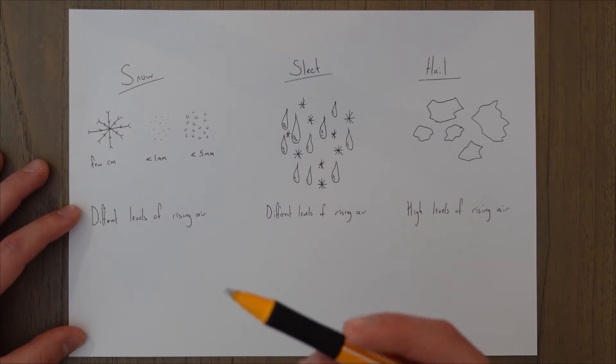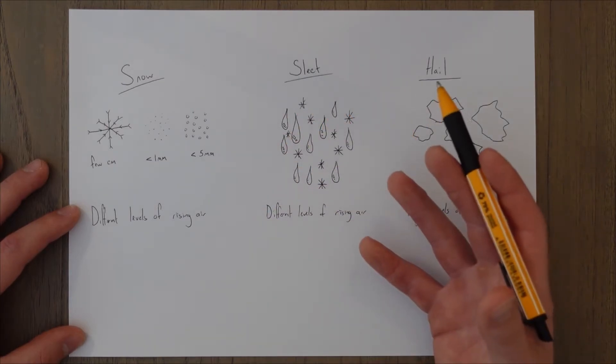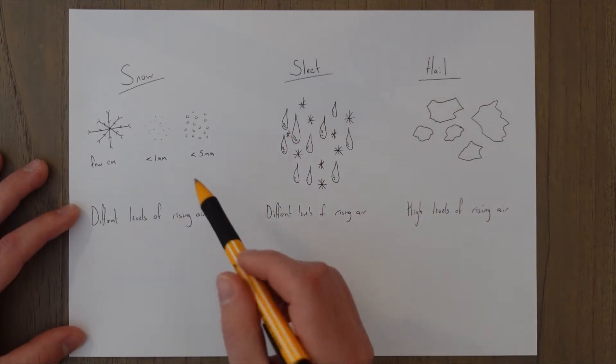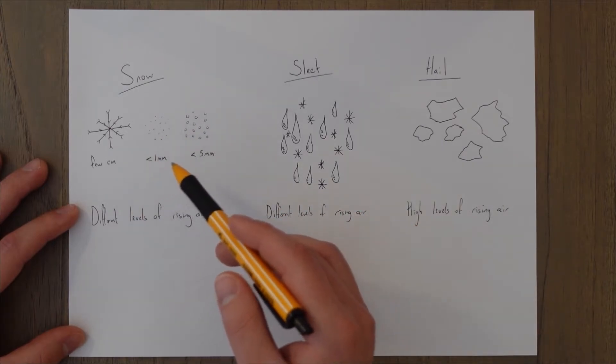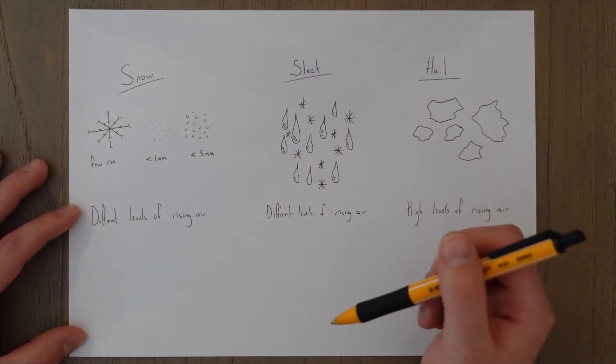There's no rule in terms of if this is going to come from stratiform clouds or cumuliform clouds, there's gonna be different levels of rising air and it just has to be cold essentially for snow to form.